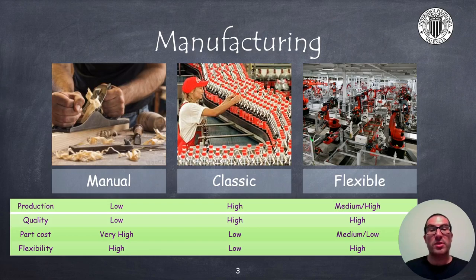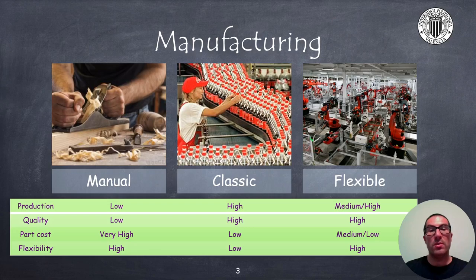Manufacturing processes can be classified into three categories, attending to aspects such as their production capacity, quality, part cost, and flexibility. The selection of one manufacturing process or another will mostly depend on these aspects. Manual manufacturing processes are carried out by operators or by manual control machinery. Their production is low, the quality is generally low, but in exchange there is great flexibility in adapting the product, at a very high cost per part.